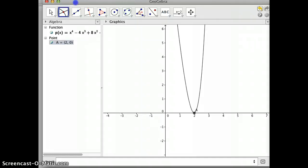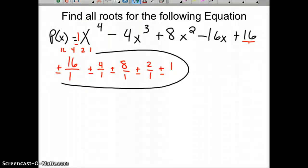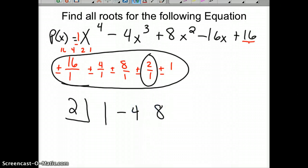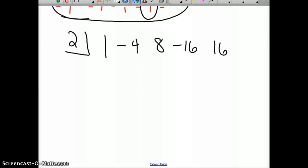So I'm going to use 2 in synthetic division. From the rational root theorem, I know 2 works. You'd have 1, negative 4, 8, negative 16, and 16, and start dividing. Basically I'm going to divide by x minus 2 twice for the two roots, so that I can get that 4th degree polynomial broken down.